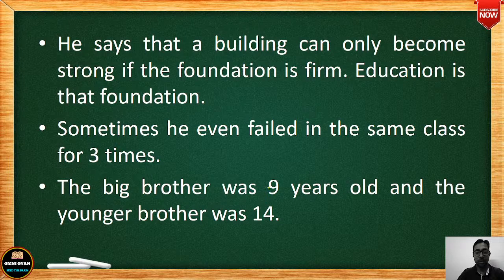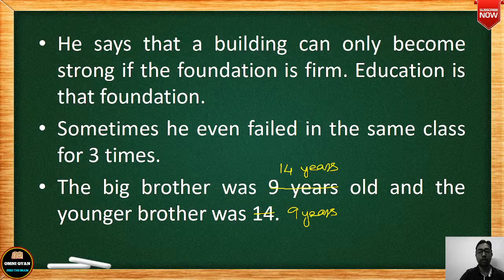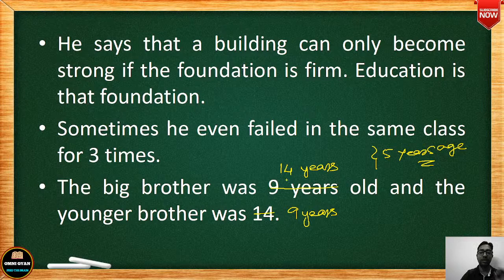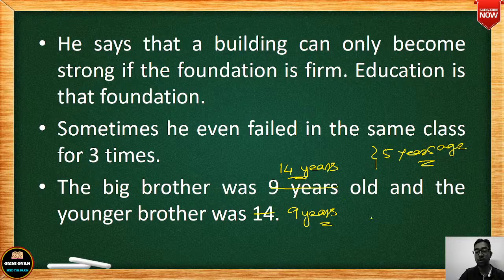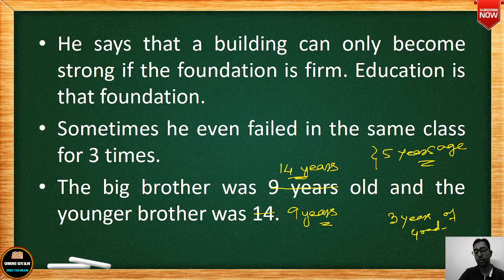The big brother was 14 years old and the younger brother was 9 years old — five years age difference. When the story begins, there is only three years of grade difference between them. Remember these ages for short answer and fill-in-the-blank questions.